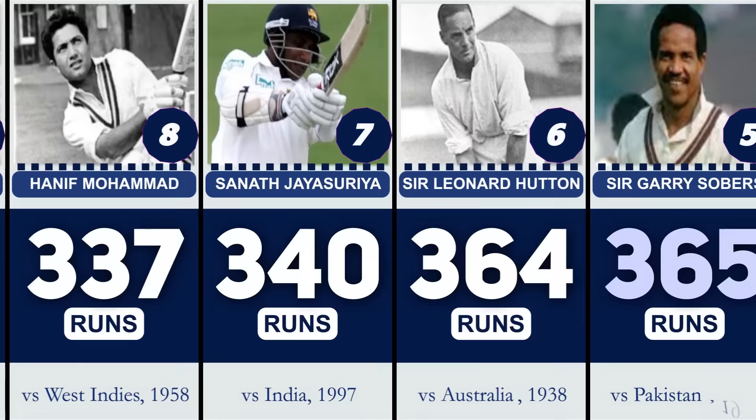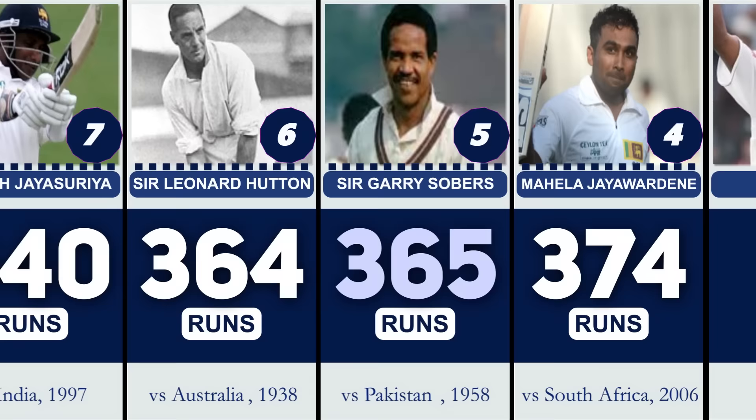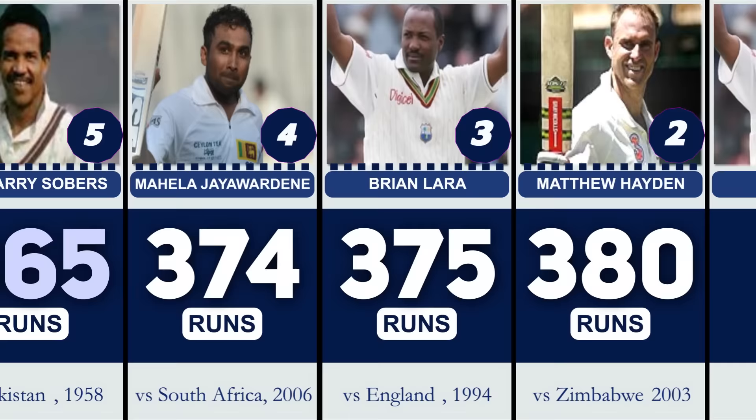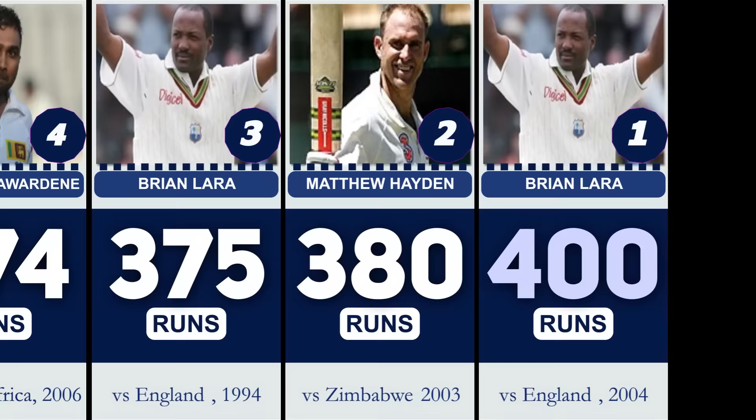Number 5: Sir Gary Sobers, 365 not out vs. Pakistan. Number 4: Mahila Joywardhan, 374 vs. South Africa. Number 3: Brian Lerner, 375 vs. England. Number 2: Matthew Hayden, 380 vs. Zimbabwe. Number 1: Brian Lerner, 400 not out vs. England.